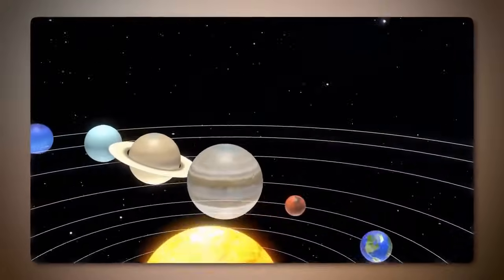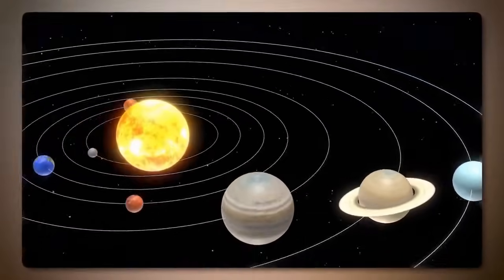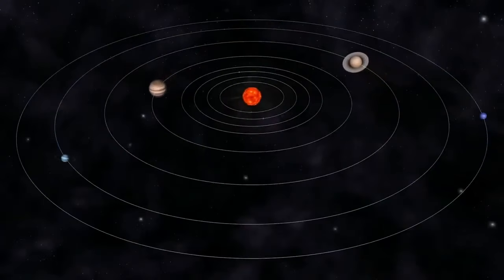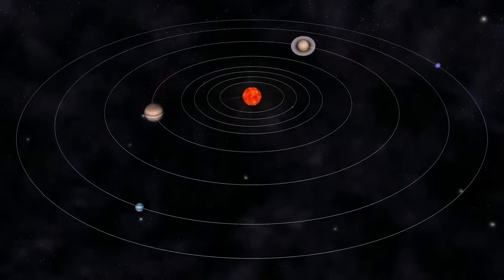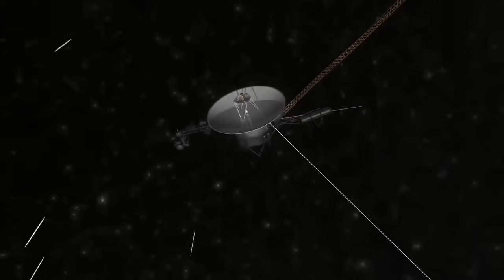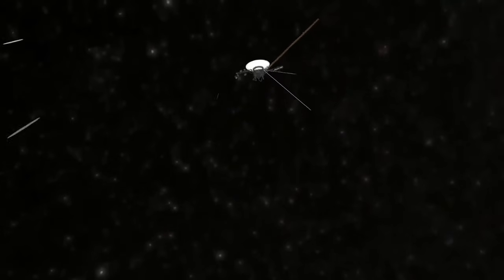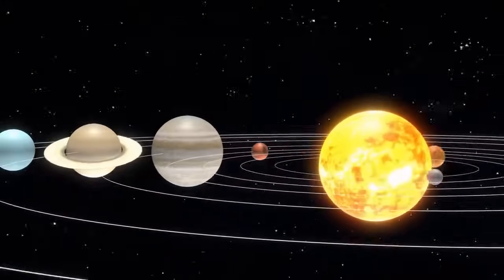Just weeks after Voyager 2's launch on August 20, originally designed for a five-year mission to study the outer planets, these resilient probes have surpassed all expectations, continuing to send data back to Earth more than 44 years later as they venture into interstellar space.